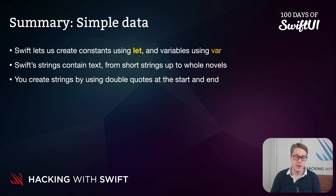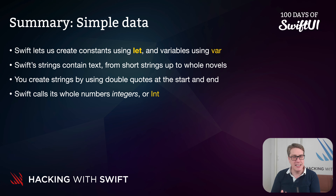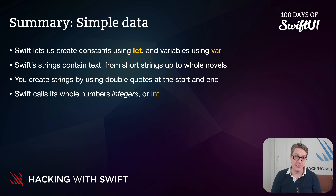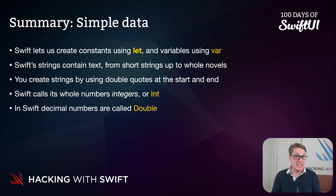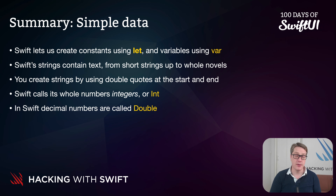To store whole numbers you want integers — or in Swift's world, an `Int` — which have extra functionality such as `isMultiple(of:)`. If you want decimal numbers, you want a `Double`, short for double-length floating point number.